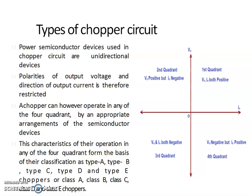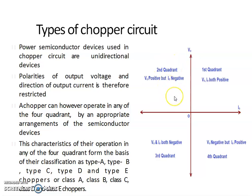If the chopper circuit provides first quadrant operation — that is, both the output voltage and current are positive — that type of chopper is known as Type A or Class A chopper. If a chopper circuit provides second quadrant operation — that is, output voltage is positive but output current is negative — that is known as Class B or Type B chopper.